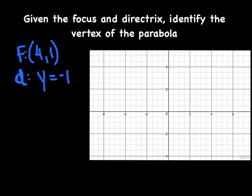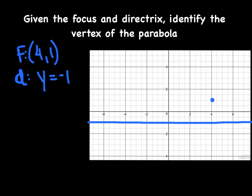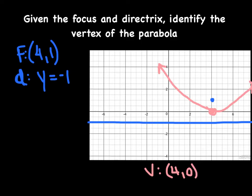This time, instead of a graph, we create parts ourselves. We're given the focus and directrix and need to sketch the parabola and identify the vertex. The focus is at (4, 1), and the directrix is at y = −1. Halfway between those two is the vertex — one unit below the focus and one unit above the directrix — placing the vertex at (4, 0). The parabola sweeps through where every point is equidistant from the focus and directrix.